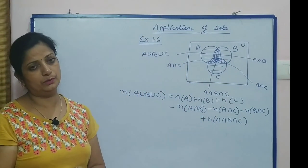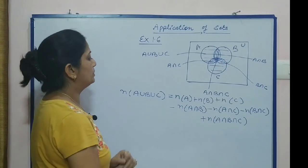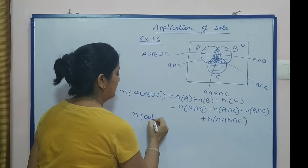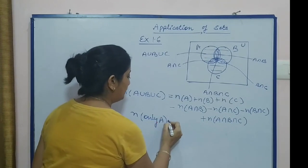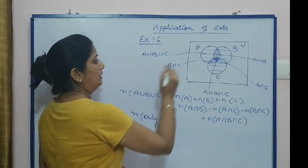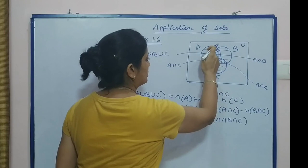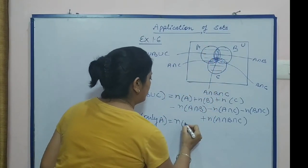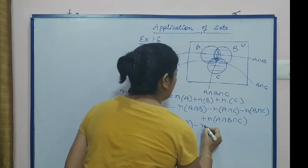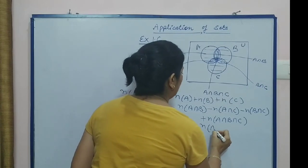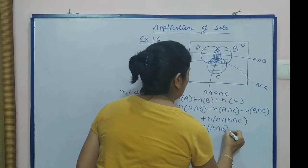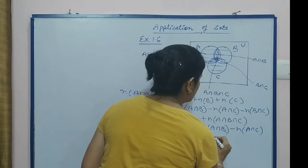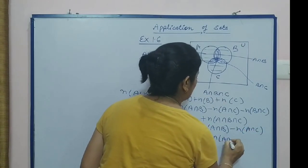Suppose you need to calculate 'only A'. Only A means just that one portion in the Venn diagram. For only A, you subtract A intersection B and A intersection C from A, and then add back the intersection of all three.